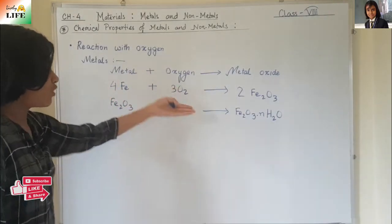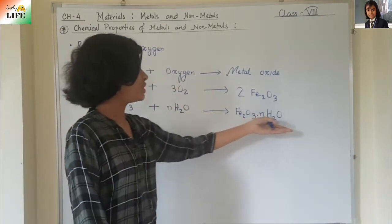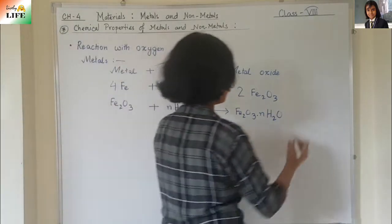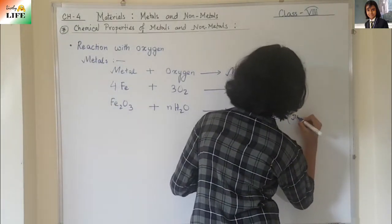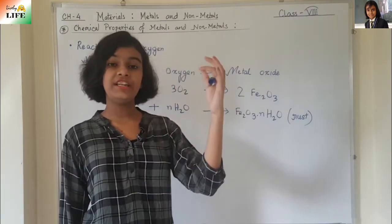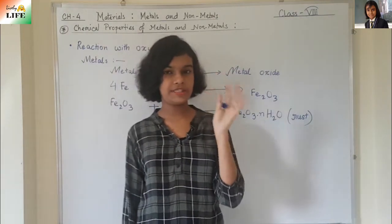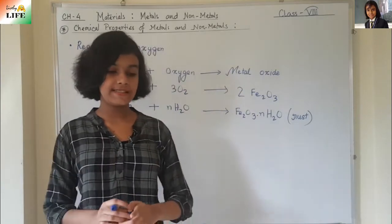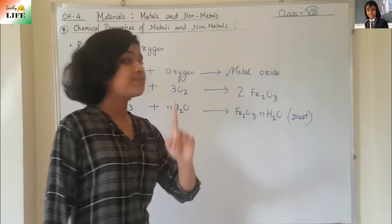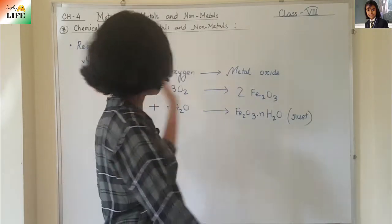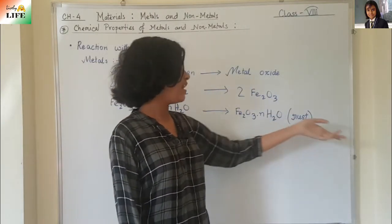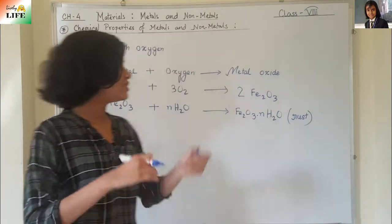Fe₂O₃·nH₂O is rust. Rust is that reddish or brownish coating seen on iron materials. Iron gets eaten away and it converts into Fe₂O₃·nH₂O.